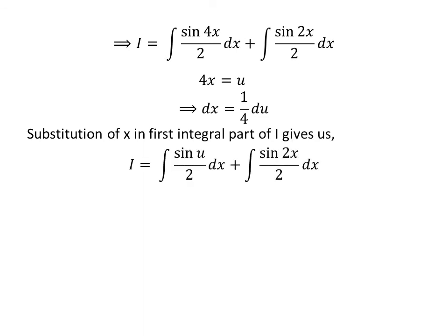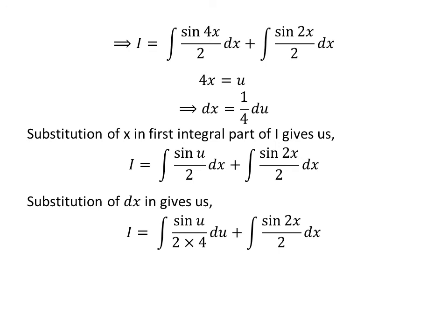Let us substitute 4 times x by our assumed value in the integral of sine of 4 times x upon 2 with respect to x. So i is equal to the integral of sine of u upon 2, plus the integral of sine of 2 times x upon 2. Now let us replace the differential of x by our newfound value, 1 upon 4 times differential of u. So i is equal to the integral of sine of u upon 2 times 4 with respect to u, plus the integral of sine of 2 times x upon 2 with respect to x. As 2 times 4 is 8, and the integral of sine of u is minus cosine of u, so i is equal to minus cosine of u upon 8, plus the integral of sine of 2 times x upon 2 with respect to x.